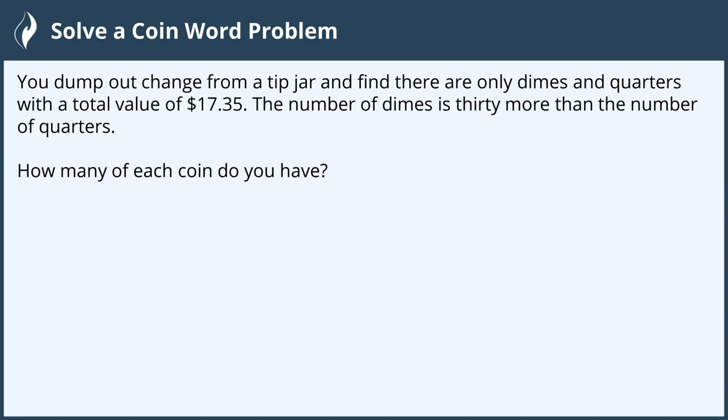You dump out change from a tip jar and find there are only dimes and quarters with a total value of $17.35. The number of dimes is 30 more than the number of quarters. How many of each coin do you have?